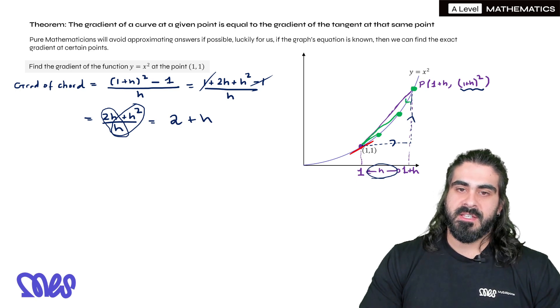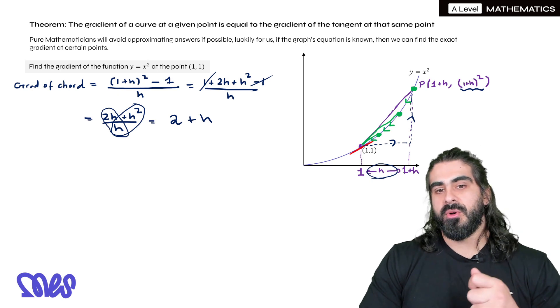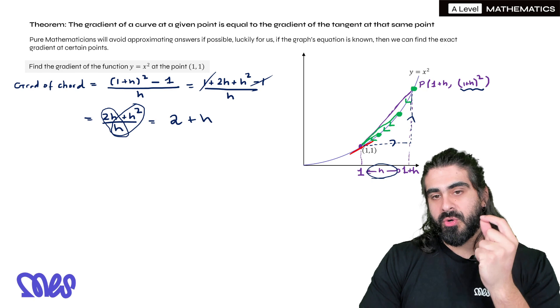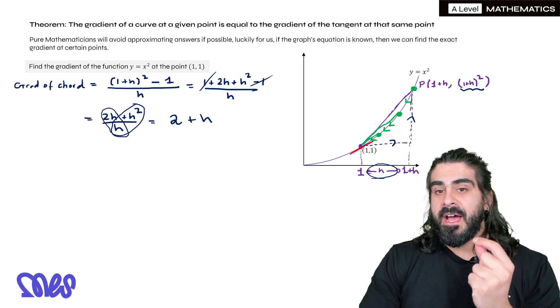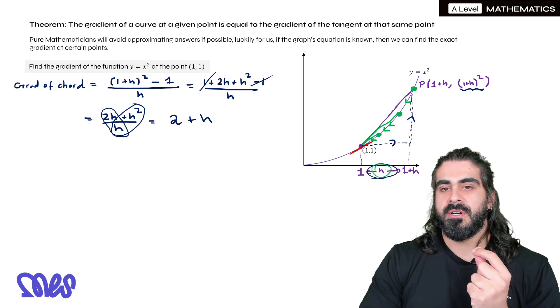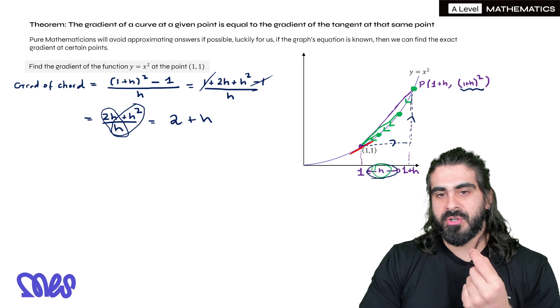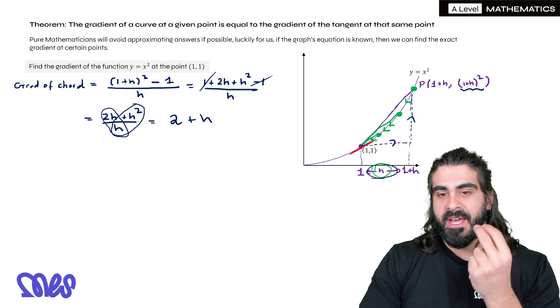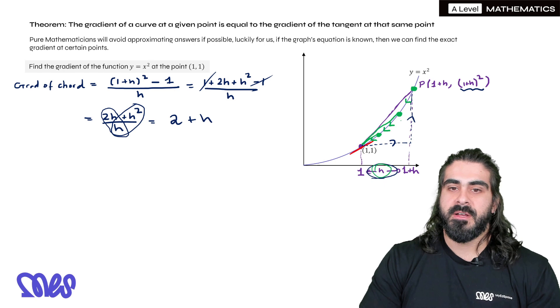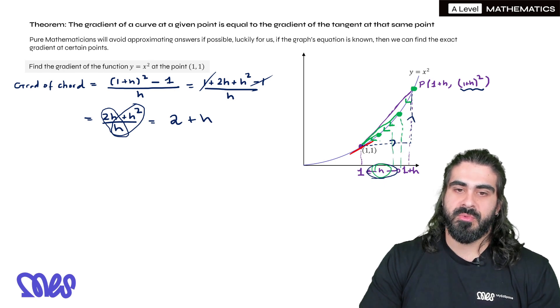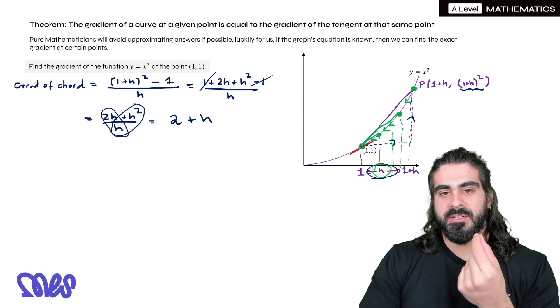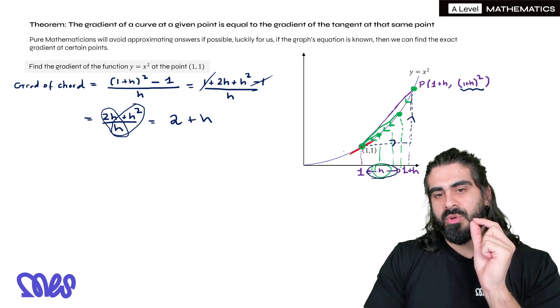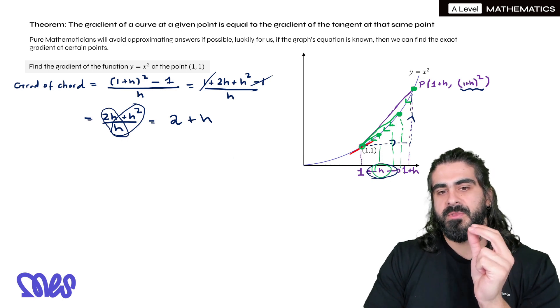So what we're noticing is that if we take this point and move it closer and closer to the point in which we want to find the gradient, the chord approximation becomes better. And now you have to think about what happens to the h value as you move those points closer and closer. Well, the h value must get smaller because these points are getting smaller and smaller. So the h value must be getting smaller.